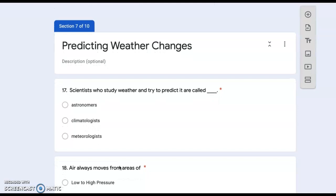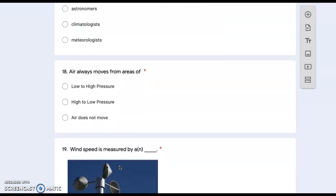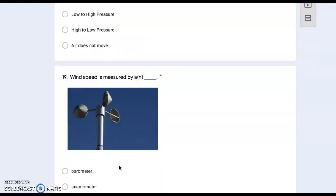Predicting weather changes. Number seventeen: scientists who study weather and try to predict it are called astronomers, climatologists, or meteorologists? Number eighteen: air always moves from areas of low to high pressure, high to low pressure, or air does not move?